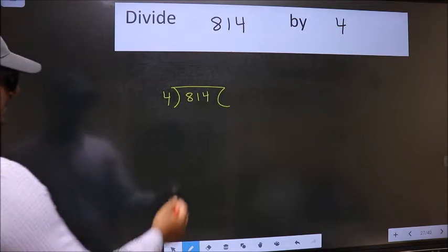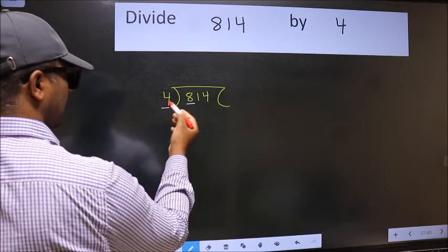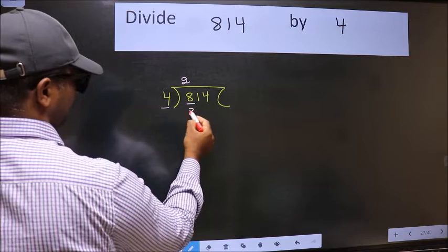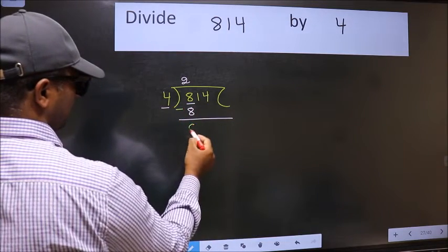Next, here we have 8 and here 4. When do we get 8 in the 4 table? 4 times 2 is 8. Now we should subtract. We get 0.